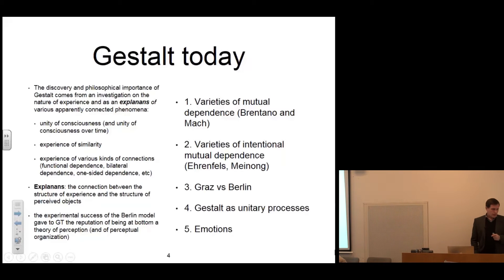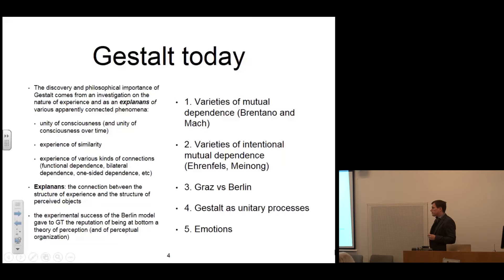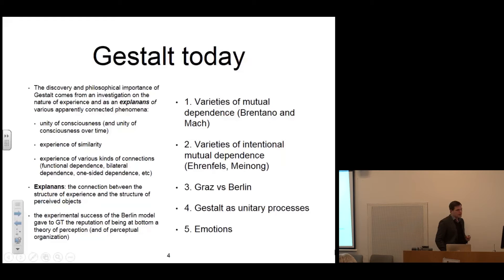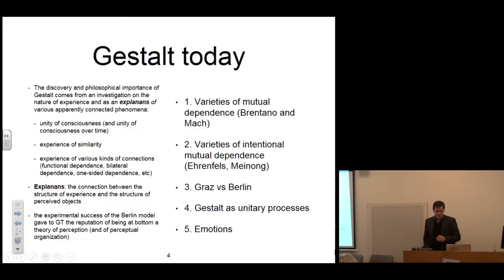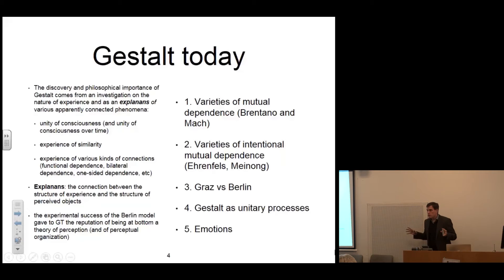The experimental success of the Berlin model gave to Gestalt theory the reputation of being at bottom a theory of perception and also of perceptual organization. But the theory is more general, and I will try to show it in the next few slides. I will first say a few things on the varieties of mutual dependence in the prehistory of Gestalt in Brentano and Mach, on the varieties of mutual dependence in Ehrenfels and Meinong, and then on the opposition between these two conceptions of Gestalt as seen in Graz and Berlin.